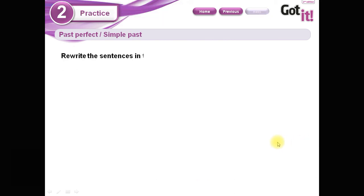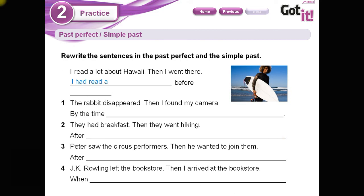Let's go to the next exercise. It says: rewrite the sentences in the past perfect and the simple past. Acá debemos reescribir lo que está acá separado por un punto. Look at the example: 'I read a lot about Hawaii. Then I went there.' This is the action that happened before: 'I had read a lot about Hawaii before I went there.'